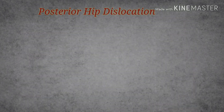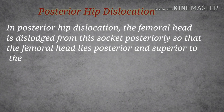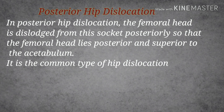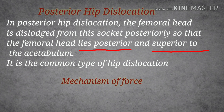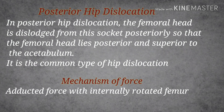Posterior hip dislocation is the most common type of hip dislocation. It occurs when the femoral head is dislodged from the acetabulum such that it lies posteriorly and superiorly to the acetabulum. The mechanism of injury involves an adducted force with an internally rotated femur.